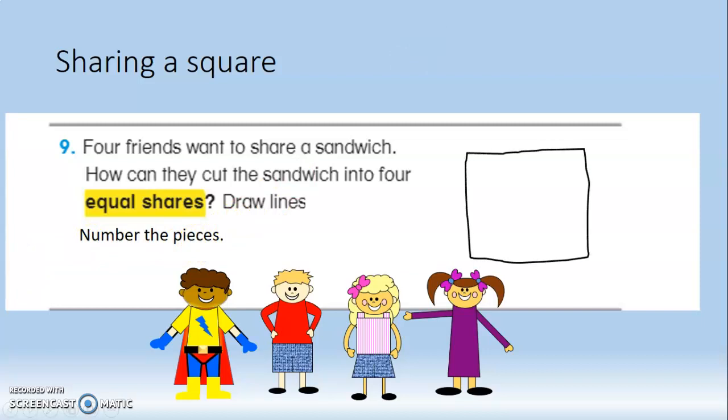So here's my square. It's not perfect, but I did my best. You'll notice that all four sides are equal length and it has four square corners. How do you think we could cut it so that all four friends can get an equal piece? How about like that? One, two, three, four. Four equal pieces.